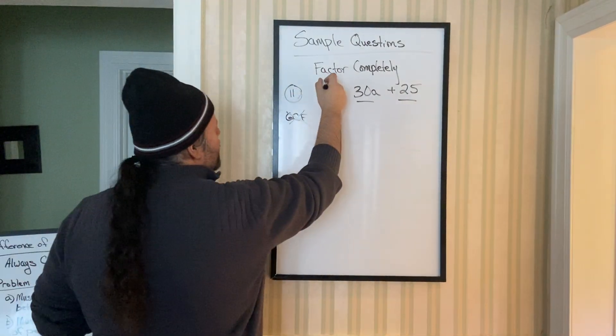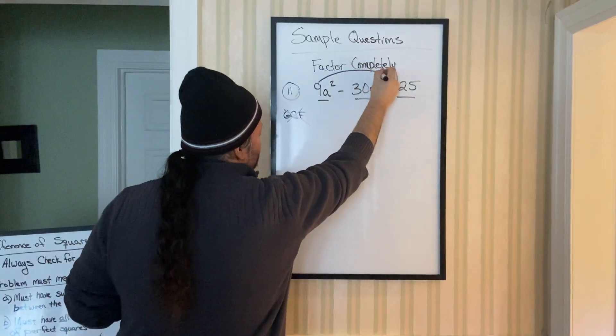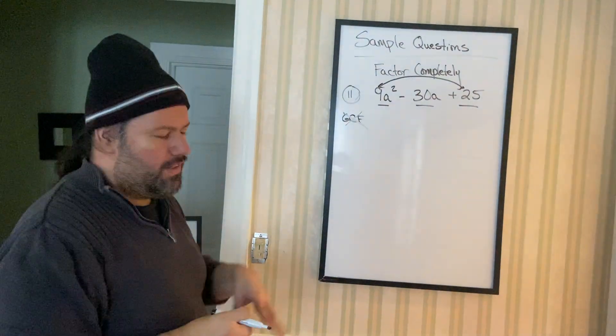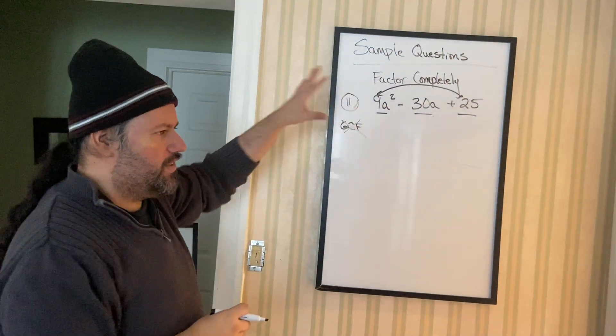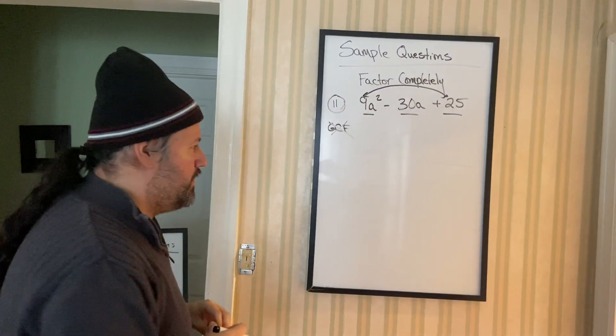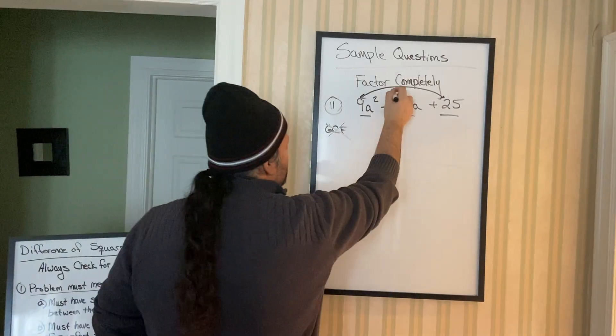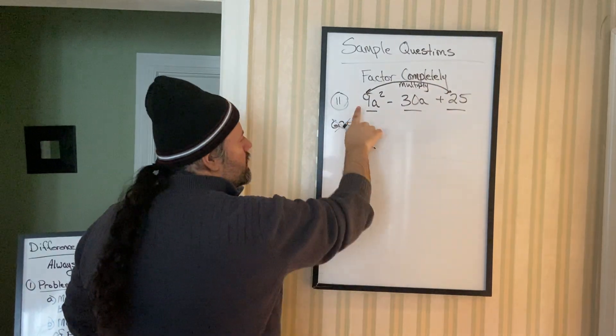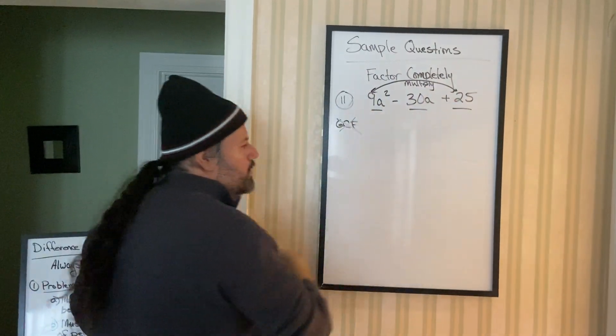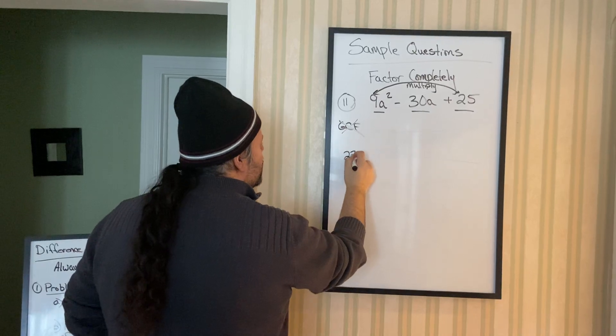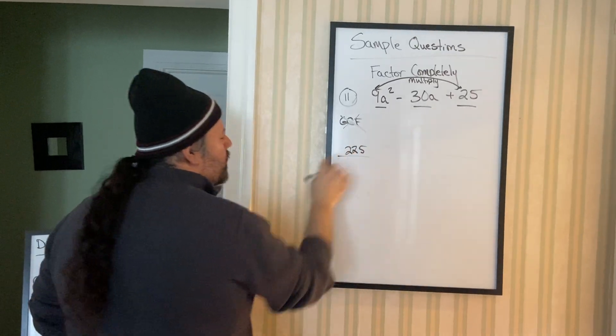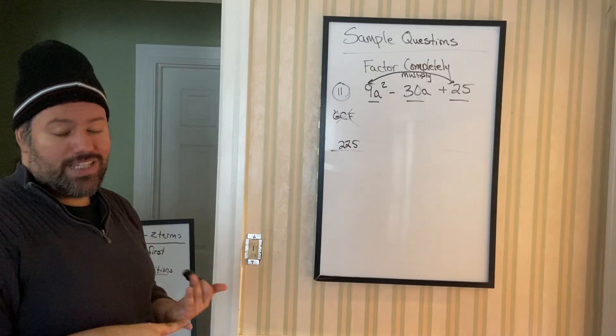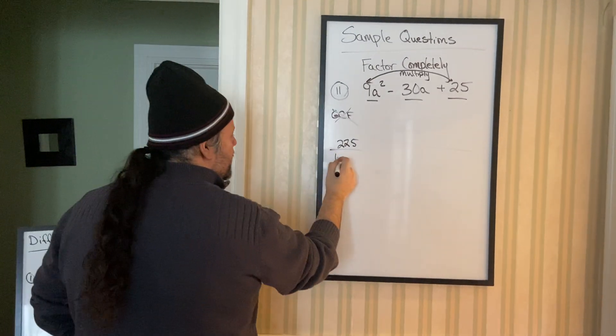So arch is basically, if you forgot, go back to 6.4 AC method, multiply those two numbers. Remember, arch is the first step, 8 steps. First step is draw the arch and multiply. Remember, you're allowed to have a calculator for the test. So 9 times 25. That's 225. Whoa, that's a big number.